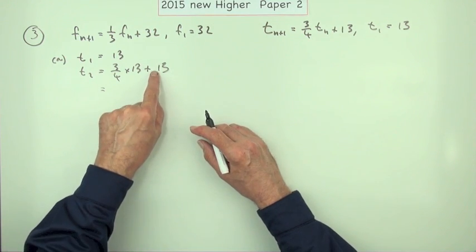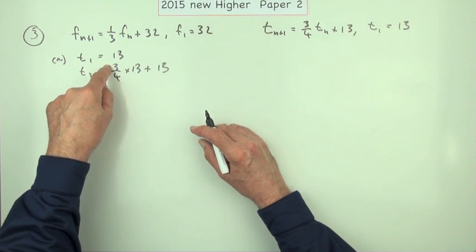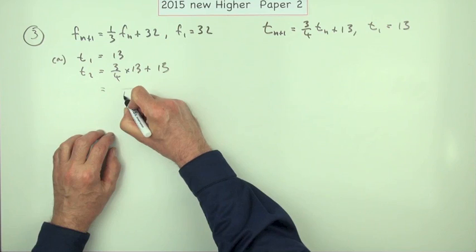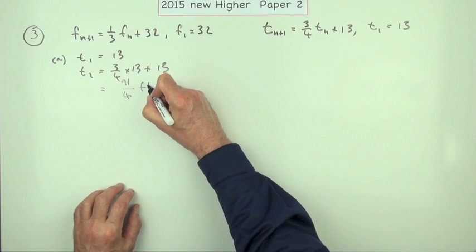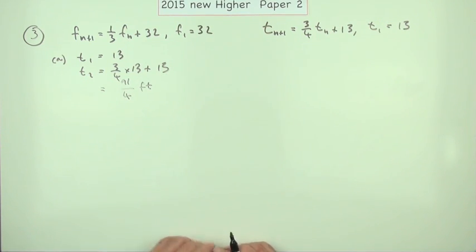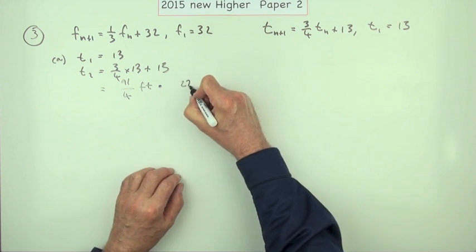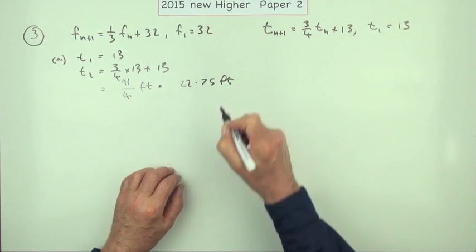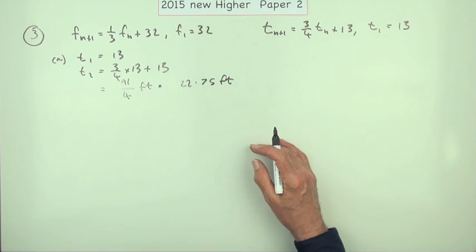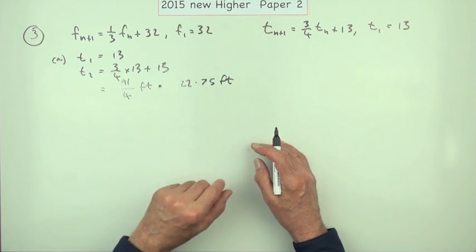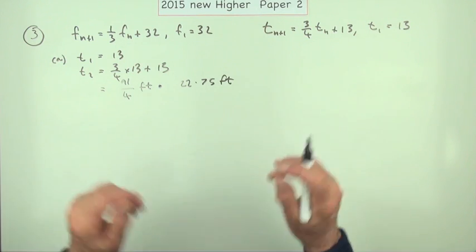You could see I've got 1 and 3/4, that's 7/4 thirteens, so that's 7 times 13 is 91, so you've got 91/4 feet. That would do for an answer. Or you could say 22 and 3/4, or 22.75 feet, or 22 feet and 9 inches. Any of those answers are perfectly acceptable according to the marking scheme.